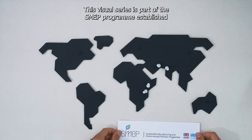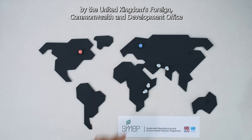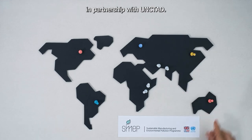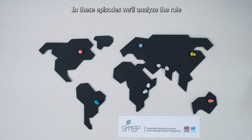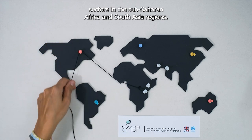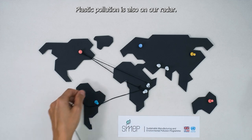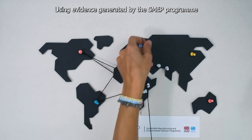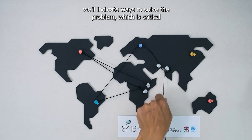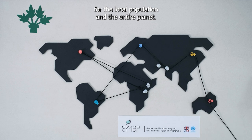This visual series is part of the SMEP program, established by the United Kingdom's Foreign Commonwealth and Development Office in partnership with UNCTAD. In these episodes, we'll analyze the role of exports in industrial pollution caused by important manufacturing sectors in Sub-Saharan Africa and South Asia. Plastic pollution is also on our radar. Using evidence generated by the SMEP program, we will indicate ways to solve the problem, which is critical for the local population and the entire planet.